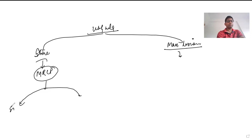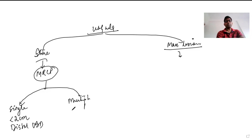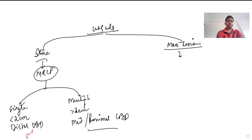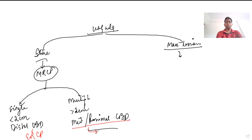Depending on MRCP findings, there are two situations. If there is a single solitary stone less than 2 cm present in the distal part of the CBD, we can go straightforward with an ERCP and consider stone extraction. However, if there are multiple calculi, or calculi more than 2 cm, or the calculi are present in the mid or proximal part of the CBD, then ERCP is not possible. In that case, we go for CBD exploration.